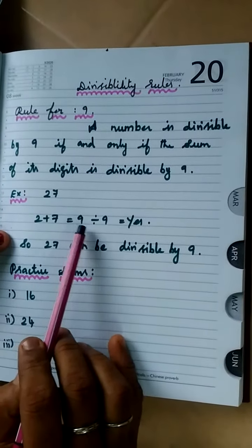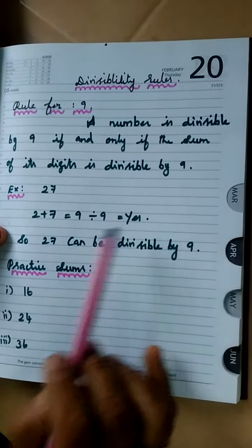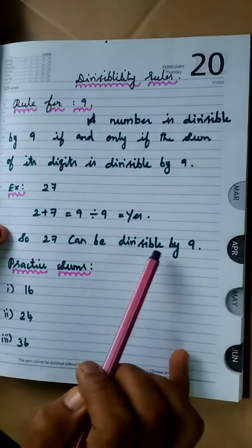2 plus 7 becomes 9. 9 can be divisible by 9? Of course. 9 in the 9th table becomes 1 time. So it should be divisible by 9. Clearly, 27 can be divisible by 9.